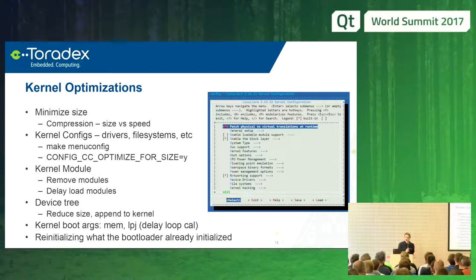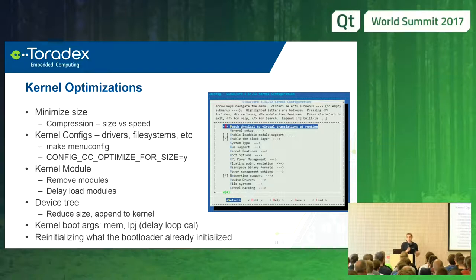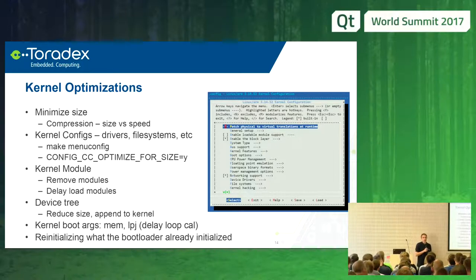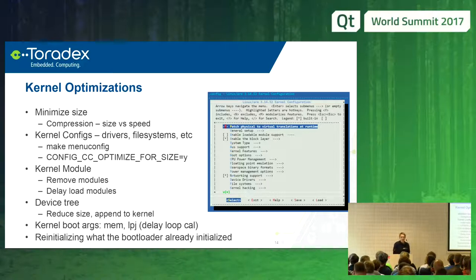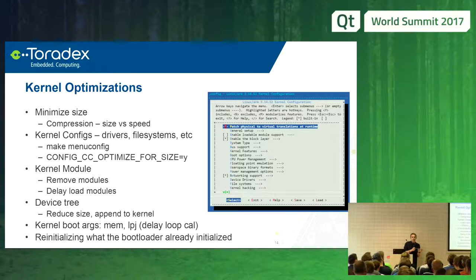Regarding kernel configs, simply remove features. For kernel modules: remove them if they're needed in the critical boot path, but modules can also be helpful — if a feature is not needed early, you can load it after the application has started. For example, the network driver can be a module and delayed until after application startup. You can also tweak the device tree, removing things to make it slightly smaller. Additionally, appending the device tree directly to the kernel image saves a little time versus loading it separately.